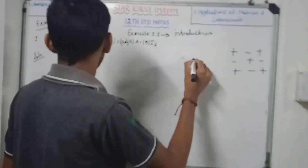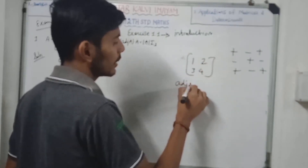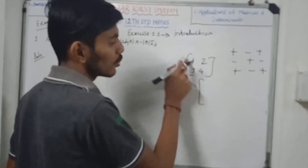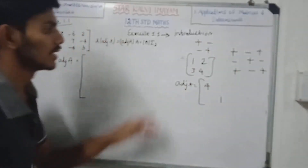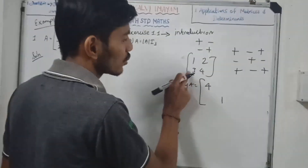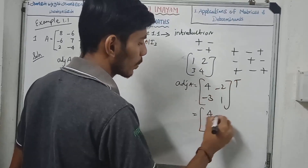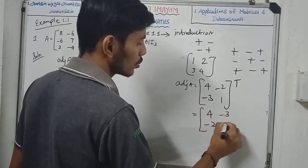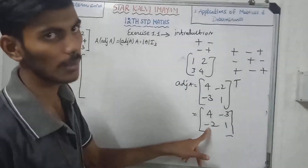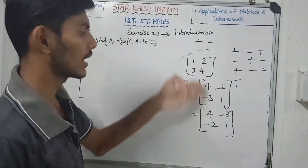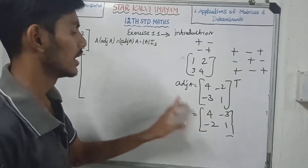For a 2×2 matrix: one, two, three, four. The interchange gives plus, minus, minus, plus. Interchange symbol: minus three, minus two. Transpose: four, minus three, minus two, one — that is the row-column interchange. Four, minus two — next column: minus three, minus two.